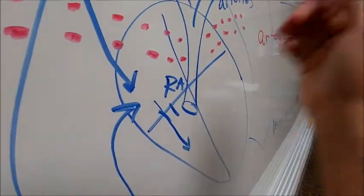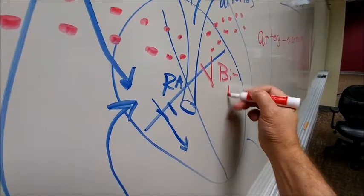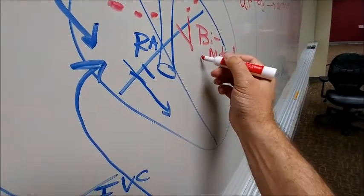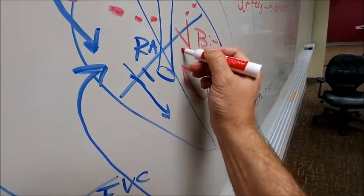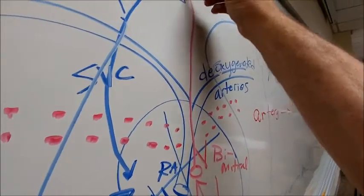From the left atrium, blood goes through the bicuspid or the mitral valve into the left ventricle, and then it ascends through the aortic semilunar valve to go upward to supply the head and the neck.